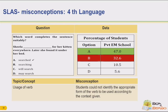Let us see what the right answer is — option A. 'Sheila dashed for her kitten everywhere. Later, she found it under her bed.' What Sheila did was: Sheila searched for her kitten. That is the right answer. The concept being tested here is correct uses of verbs — whether the student is able to use the correct form of the verb.